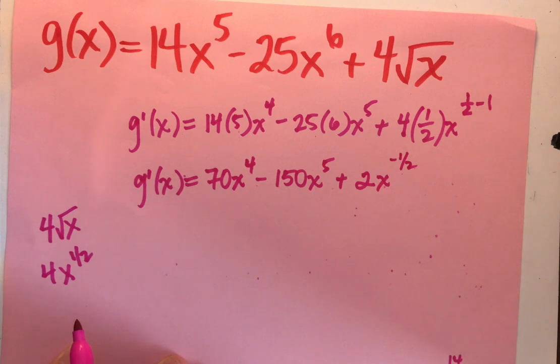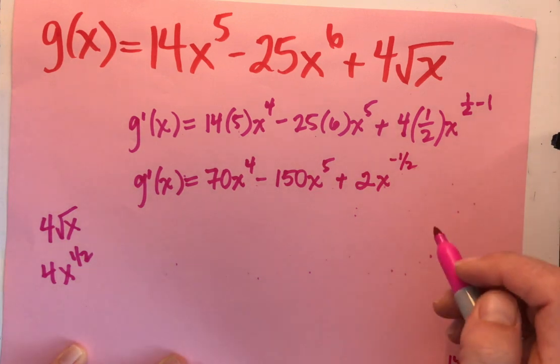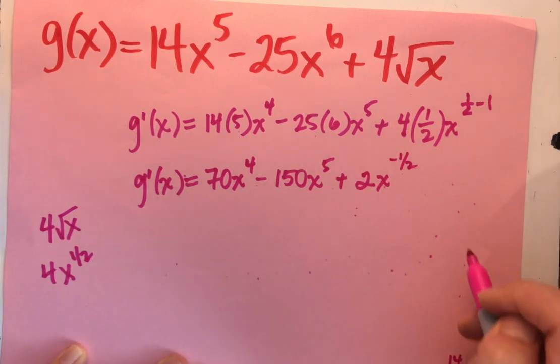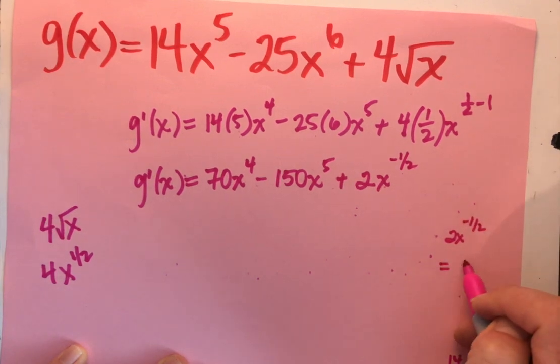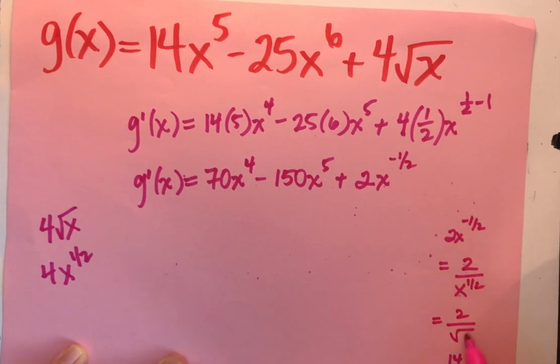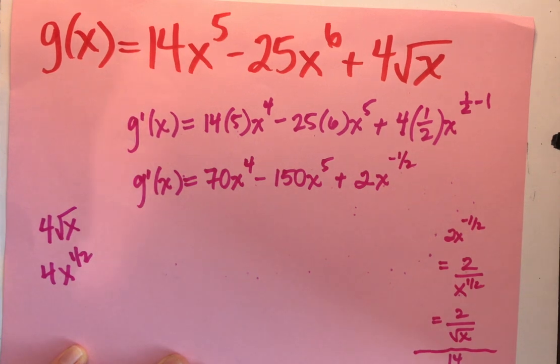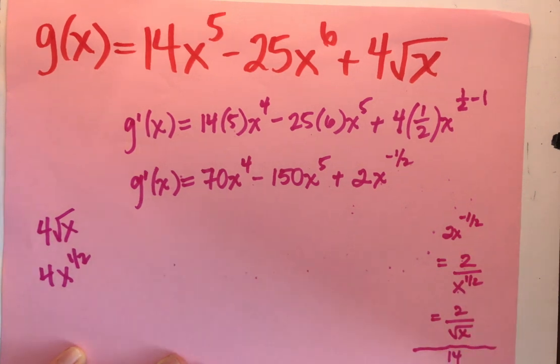And if we're going to go a little above and beyond and not leave negative exponents, 2 x to the negative 1 half, I could write as 2 over x to the 1 half, which is 2 over the square root of x, which we don't always have to do that, but just consider that as an option. You can be familiar with having negative exponents, rewriting as a positive exponent, and then taking an exponent and rewriting it as a radical.